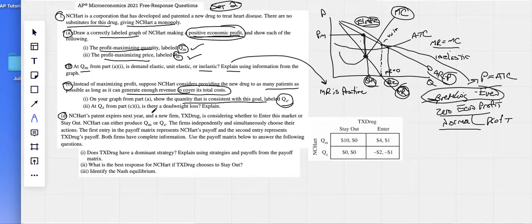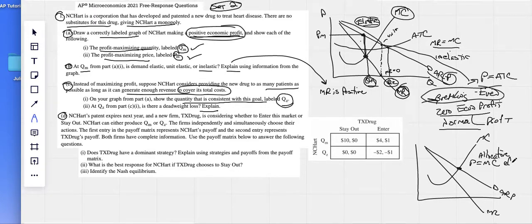At QZ from Part C1, is there a deadweight loss? Explain. What we sort of should know - here's our demand, here's our marginal revenue, marginal cost. Where we know our price, remember, this is not only demand, it's DARP. The price equals marginal cost. There it is what we call allocative efficiency. Allocative efficiency, there is no deadweight loss. If we were here, producing at profit max, that triangle right there is our deadweight loss.